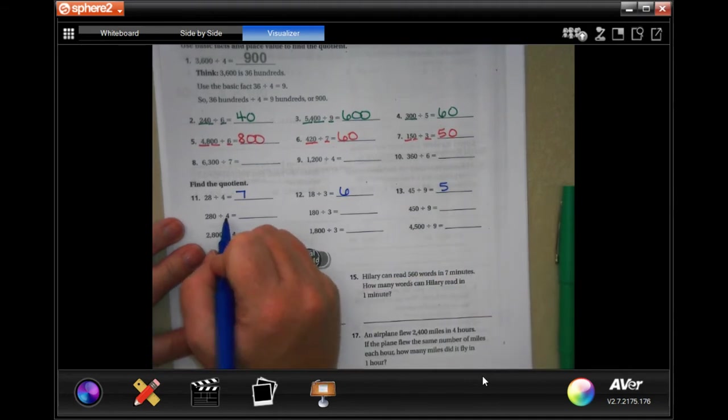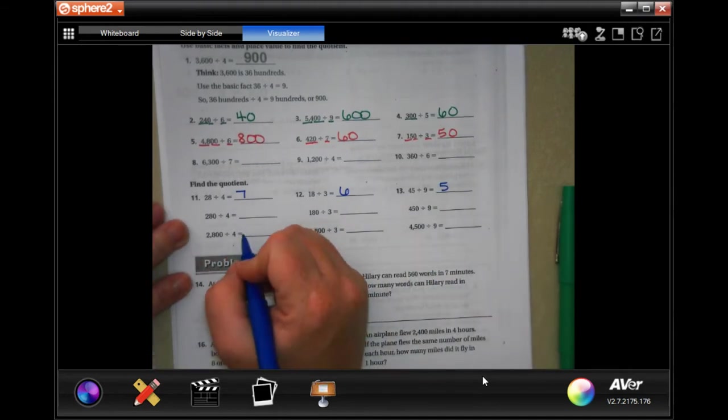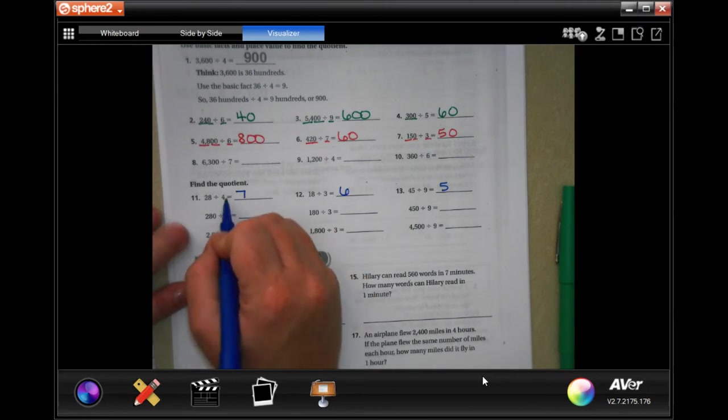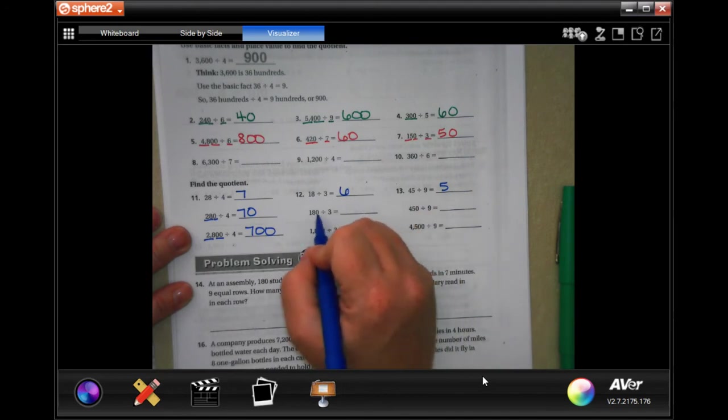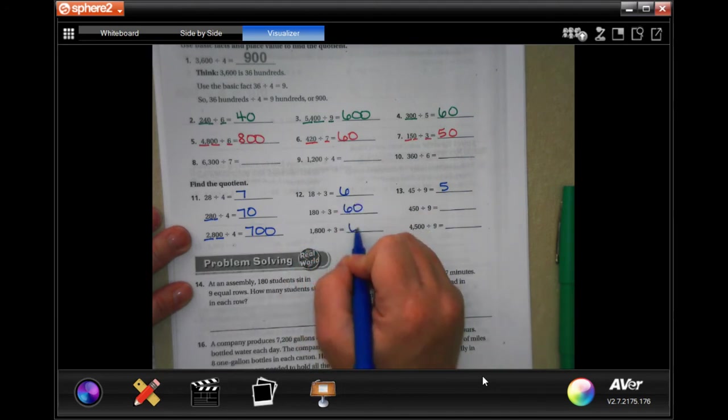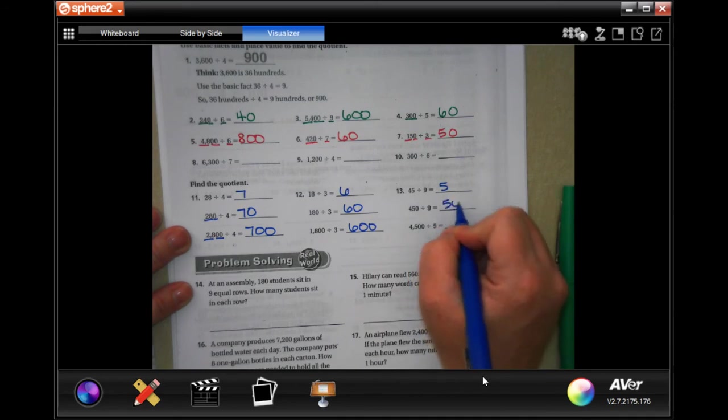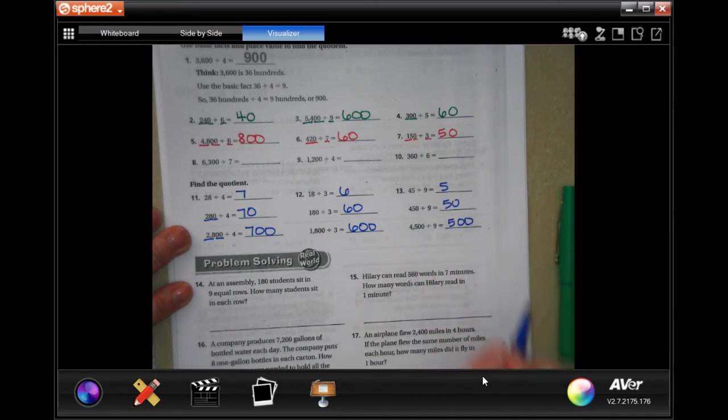We should have just gone down because four goes into twenty eight seven times, but then I have that extra zero. Now four goes into twenty eight seven times, but then I have two zeros. Same thing on this one. And on this one. Super easy guys.